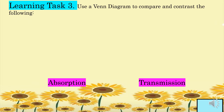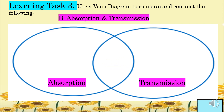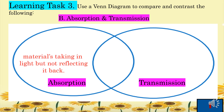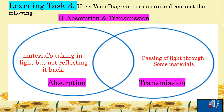For letter B, absorption and transmission: absorption refers to materials taking in light but not reflecting it back; transmission refers to the passing of light through some materials; and both are behaviors of light that occur when light strikes different materials.